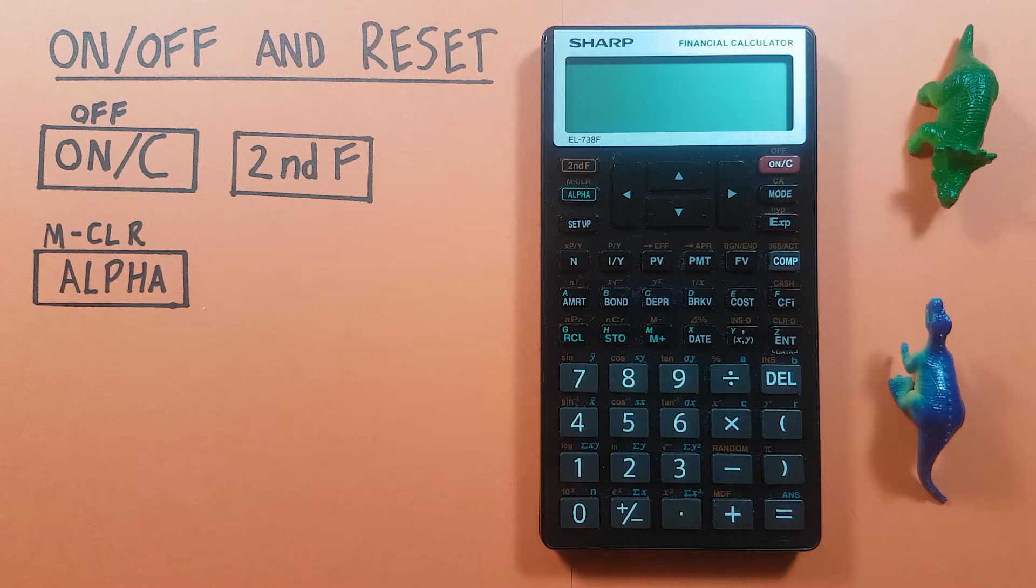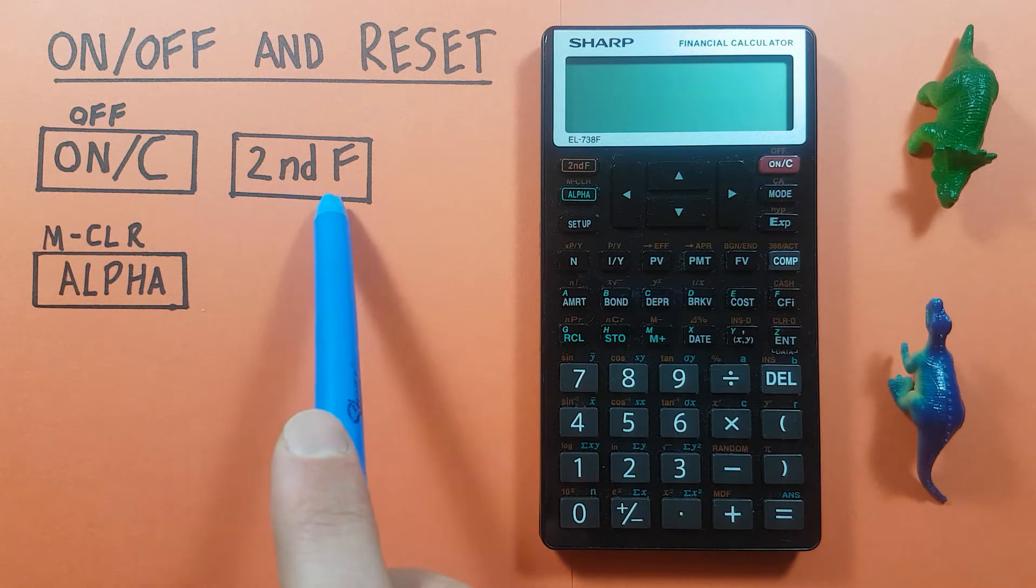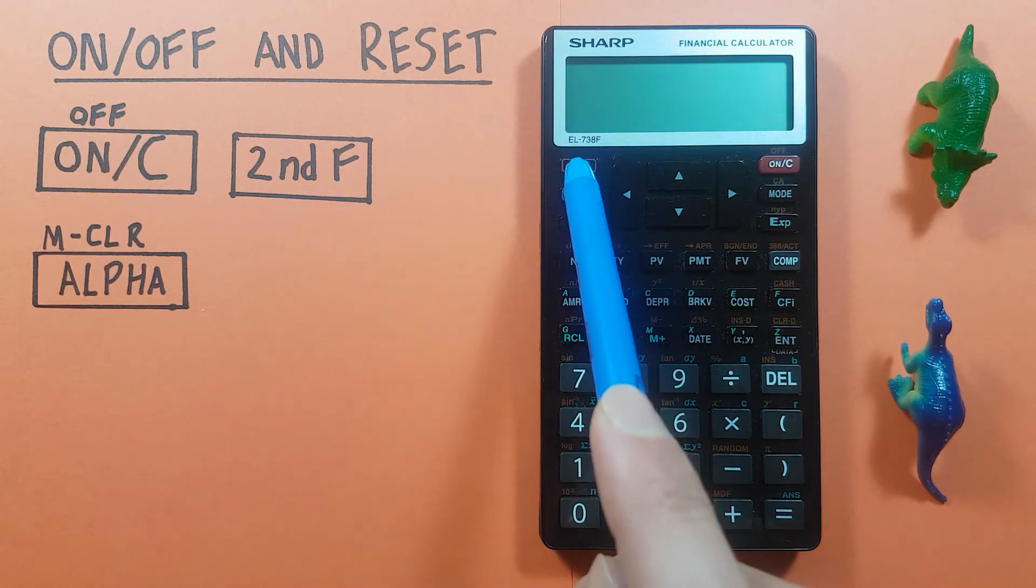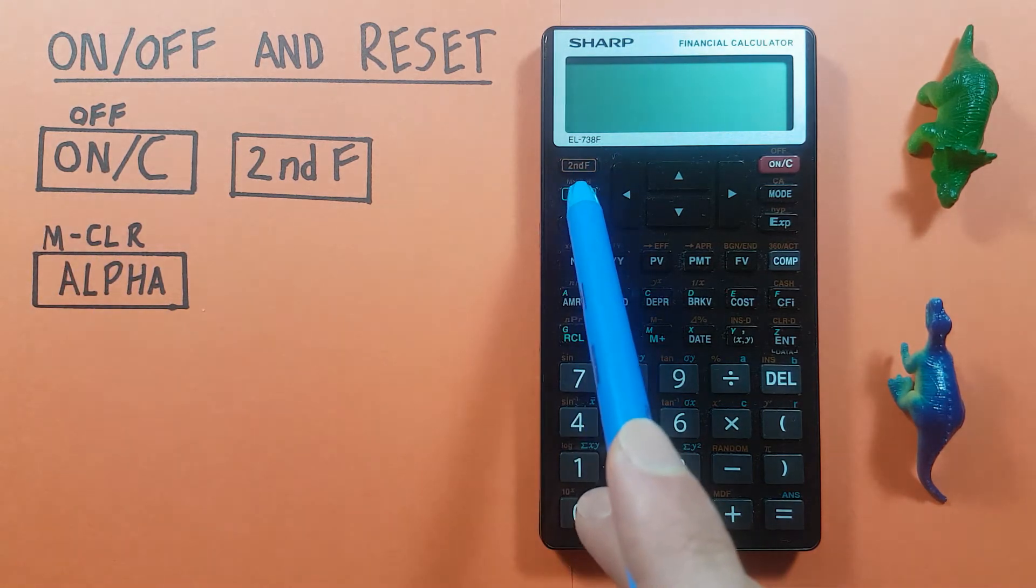To do this, we need to use the on/off key that looks like this, located here. The second function key that looks like this, located here. And we'll also be using the alpha key with the second function of M clear, looks like this, located here.